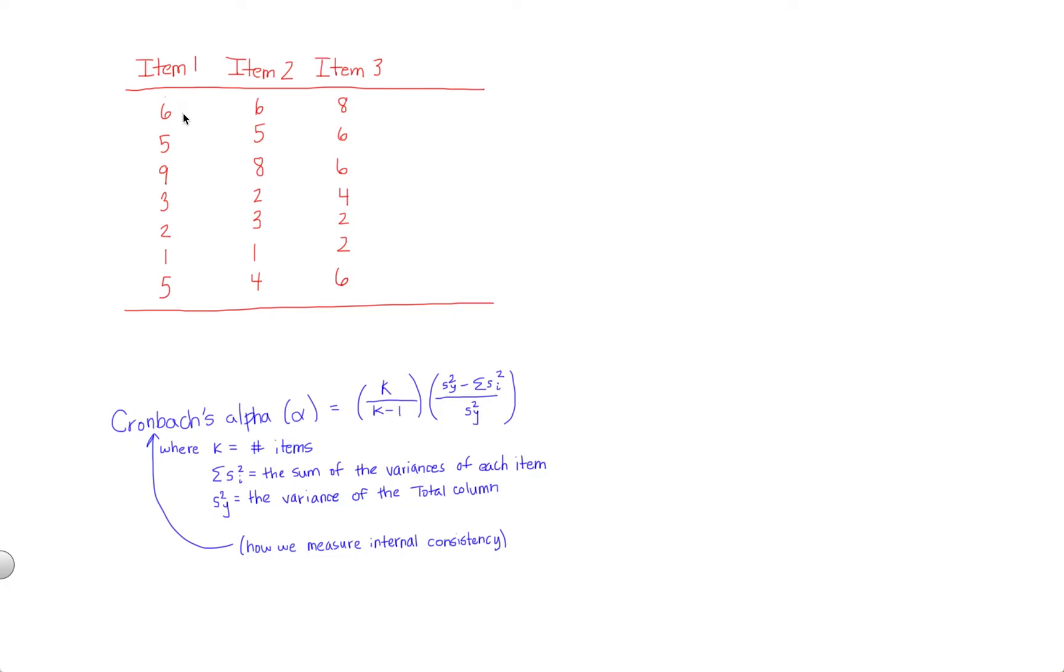This is important because if you, for example, had one item in which participants tend to respond very differently than the others, this would suggest that this item is perhaps not a good way to measure what you're trying to measure, and it might be instead tapping into something else.